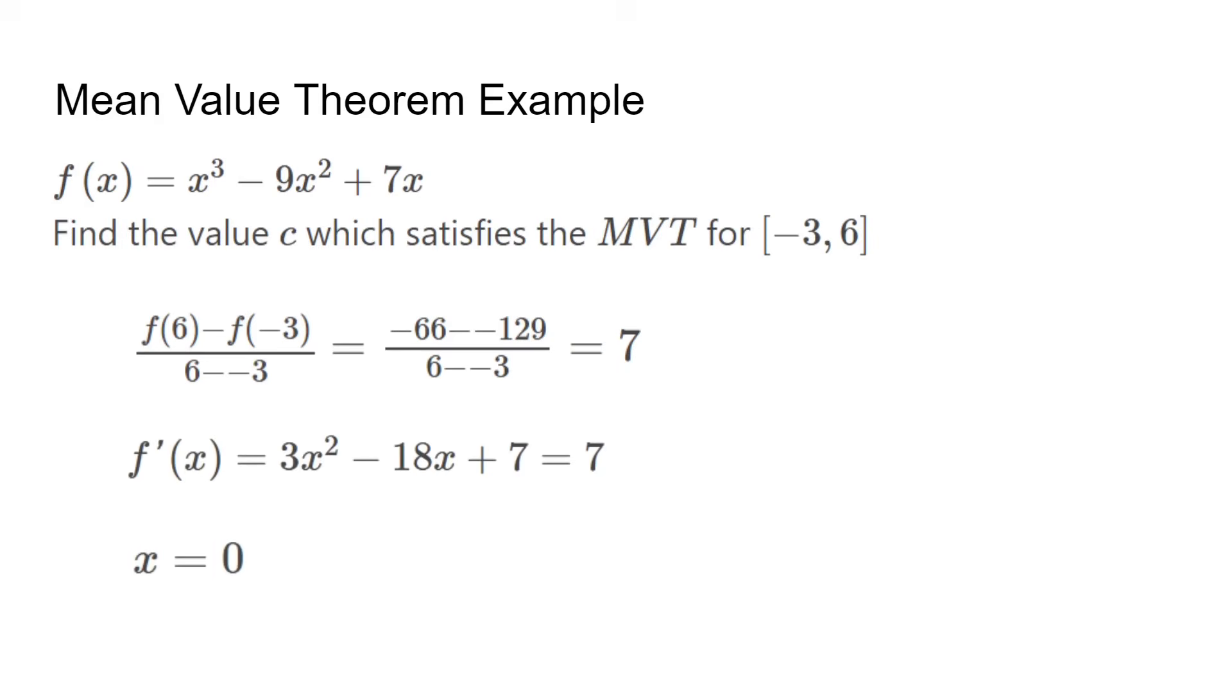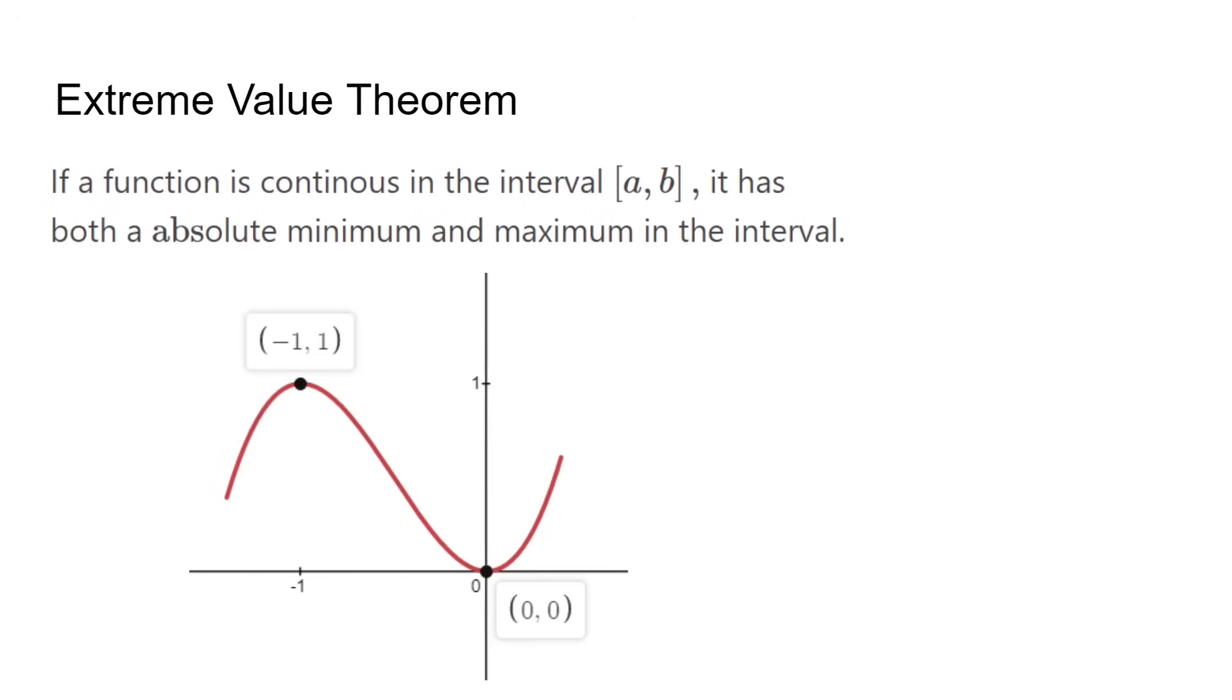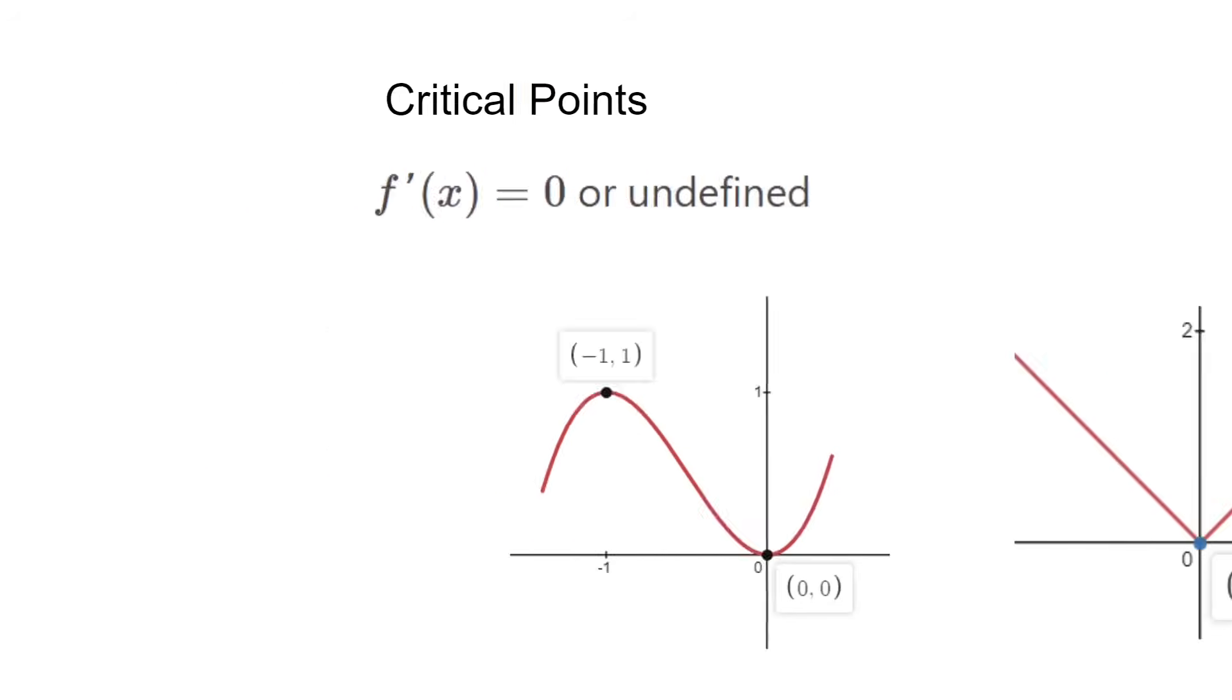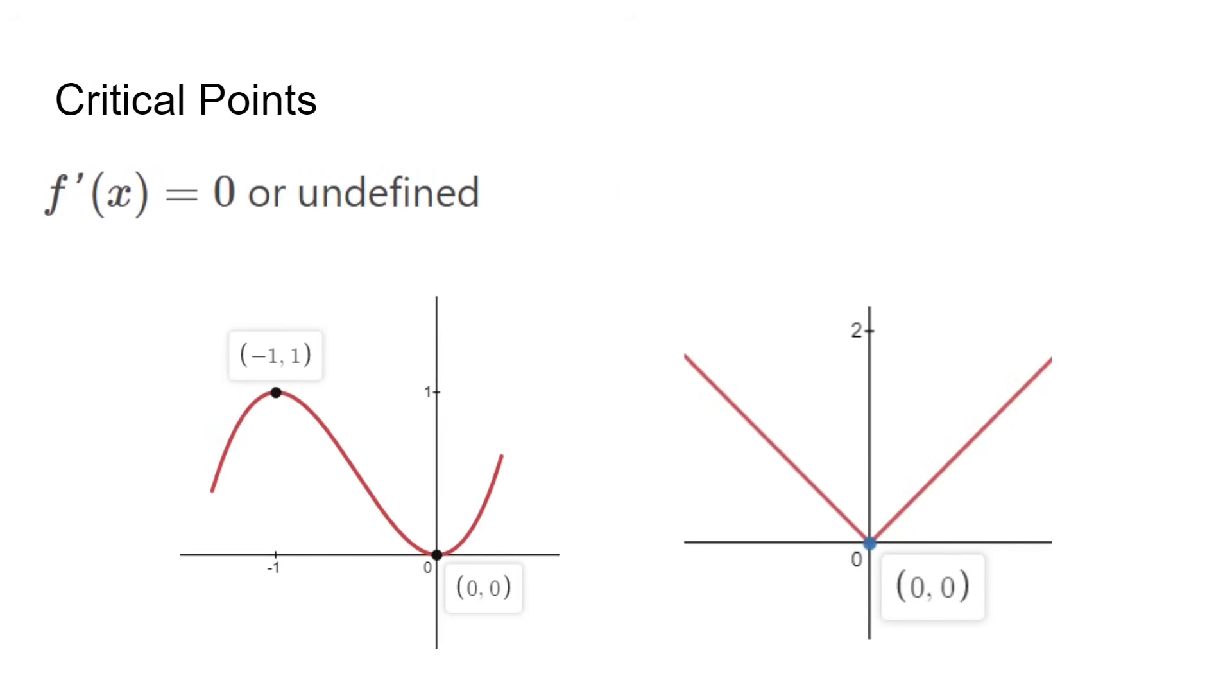The extreme value theorem says a continuous function over an interval AB has both an absolute maximum and minimum in the interval. This basically means it has a highest and lowest value as shown here. These points can be called critical points, which occur whenever f prime is 0 or undefined. An easy way is finding when the graph changes from increasing to decreasing, such as in these pictures.